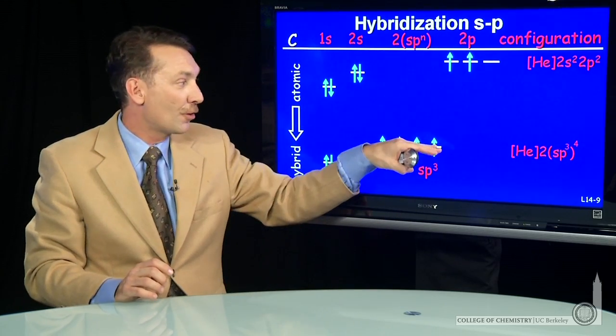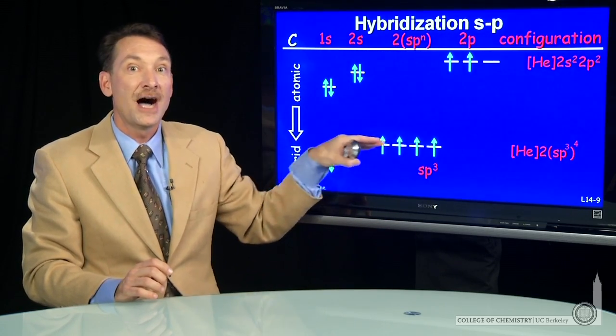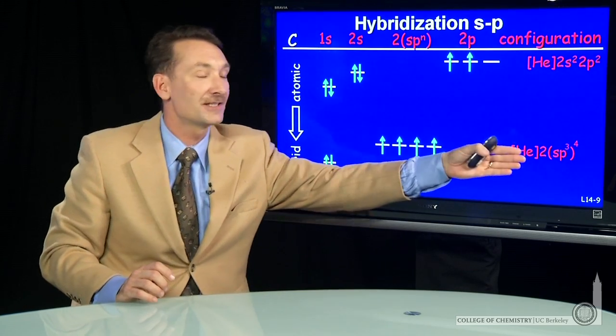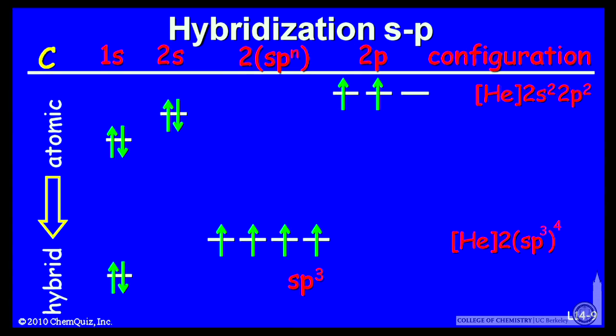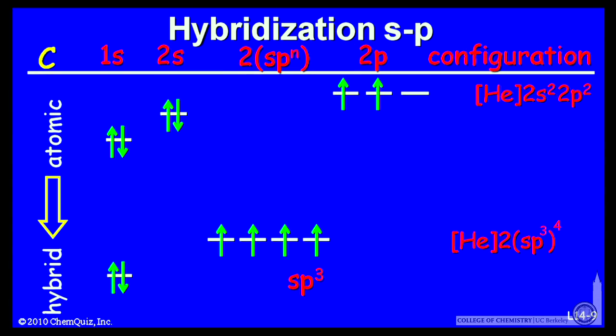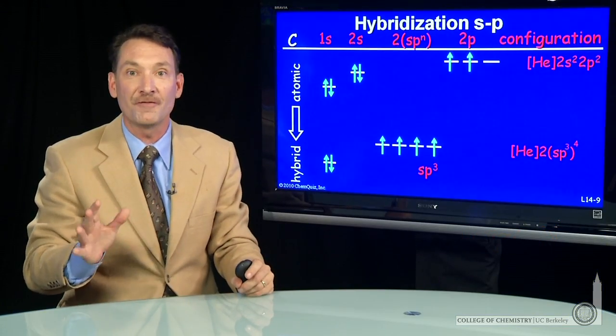So four orbitals equal energy, hybrid orbitals showing a slightly different electronic configuration, but orbitals that have the appropriate geometry for solving molecular problems.